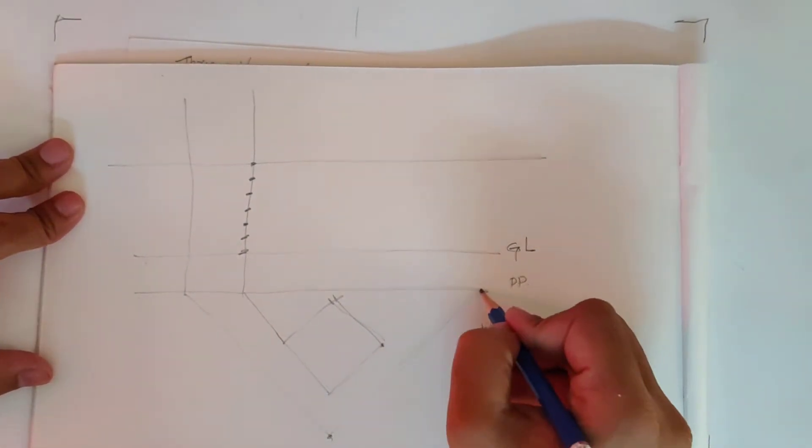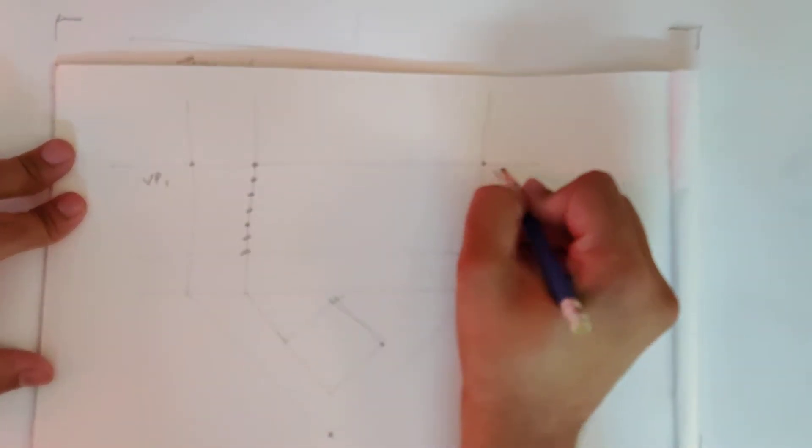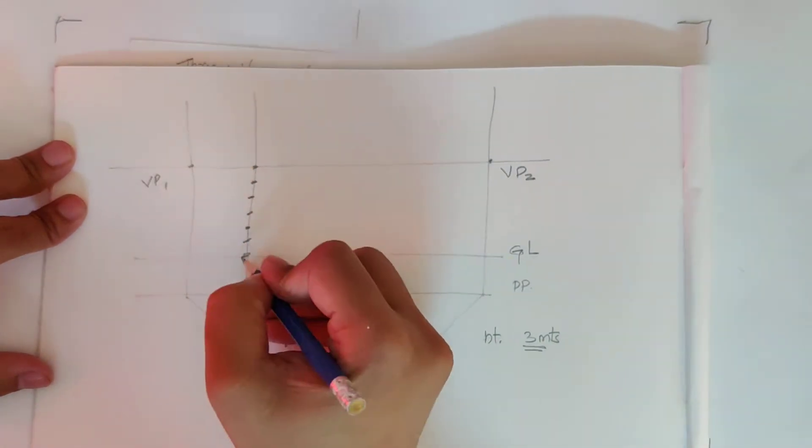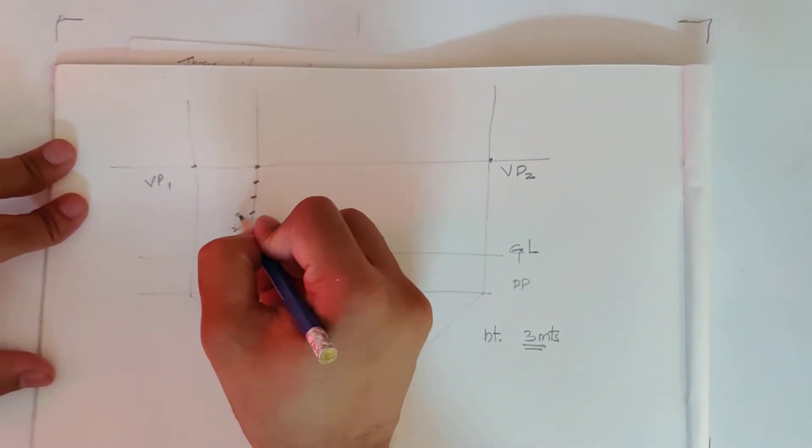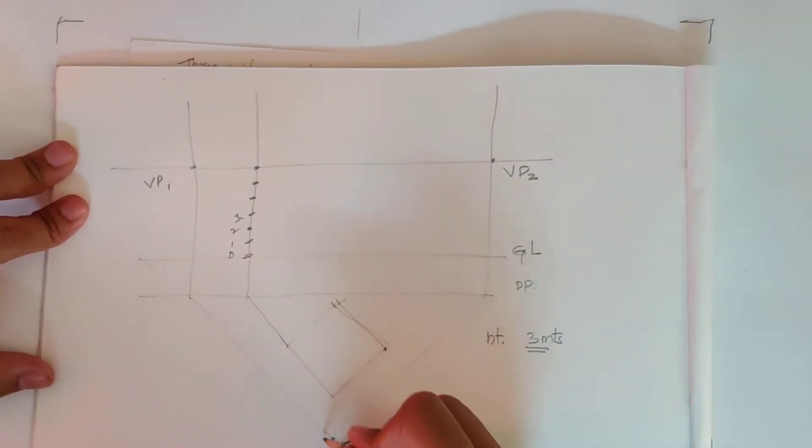On my horizontal plane are my vanishing points, VP1, VP2. Height of object is three meters. Okay, let's start making two-point perspective first.